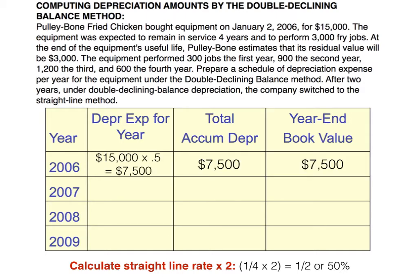In year one, we take our rate of 50% and multiply it times the beginning period book value. Remember, double declining balance ignores residual value, so since we haven't depreciated the asset at all yet, the book value equals the cost. So $15,000 times 50% gives us depreciation expense of $7,500 in year one. Total accumulated depreciation is therefore $7,500, and the year-end book value is $7,500.